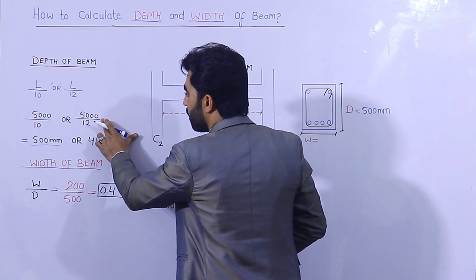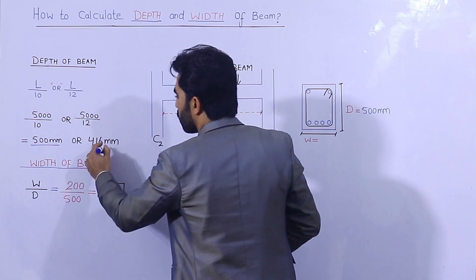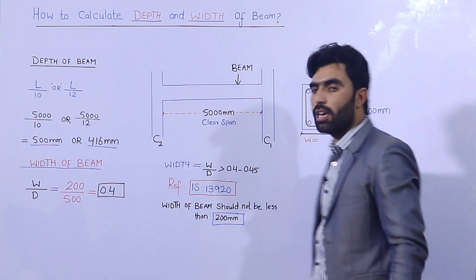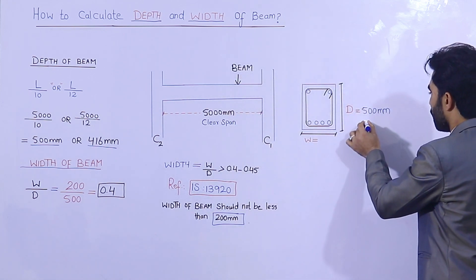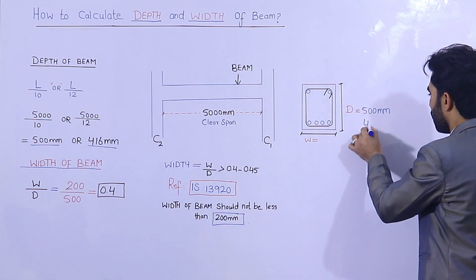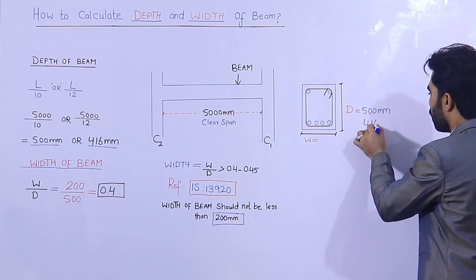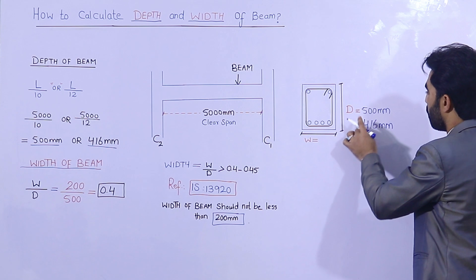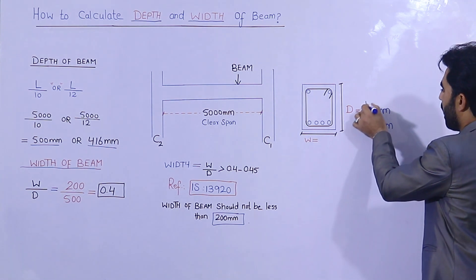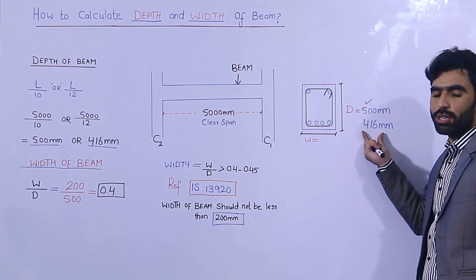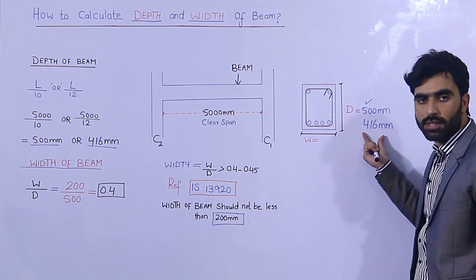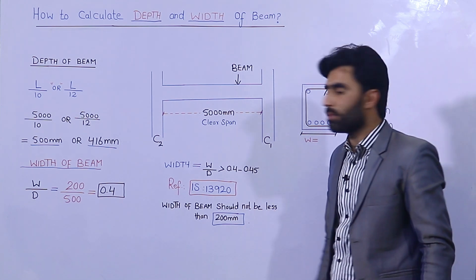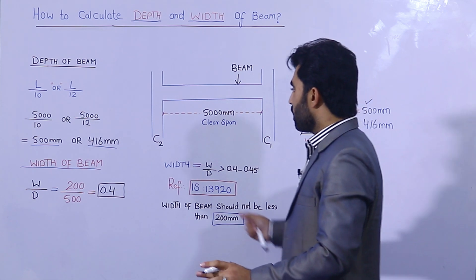Using L divided by 12: the clear span is 5000, so 5000 divided by 12 gives approximately 416 mm. You can use either value, but 500 mm is better because factor of safety is very important in civil engineering, especially for any kind of structure.